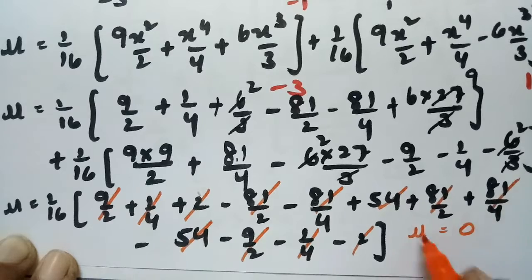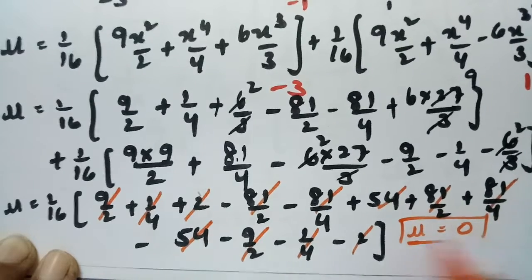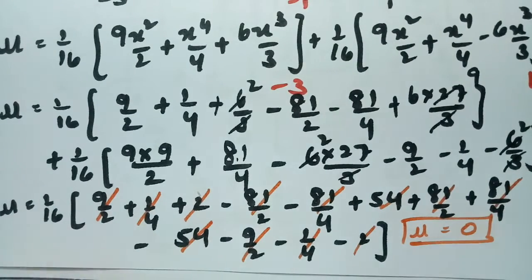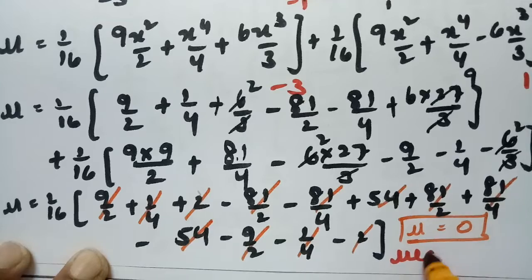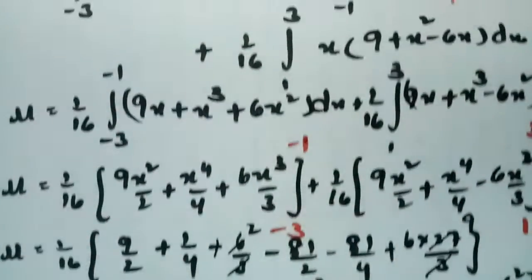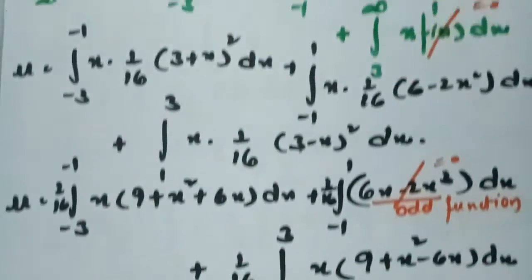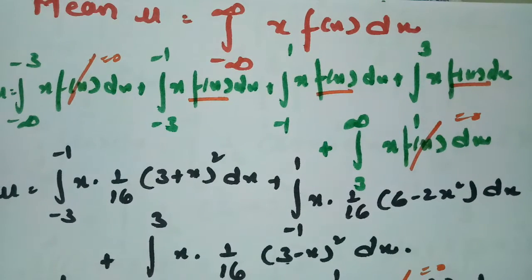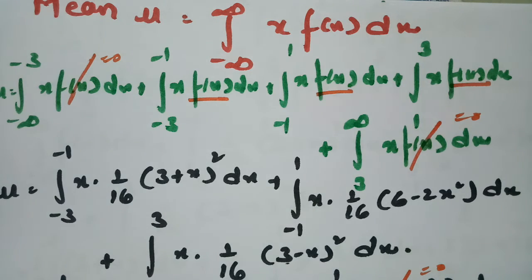Therefore, the mean μ = 0. The mean of this density function is 0. This is how we solve the problem — verify the PDF integrates to 1 and find the mean by integration. Thank you for watching. If you have any doubts, watch the video once more and share it with your friends.